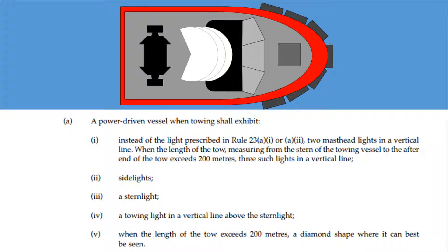three such lights in a vertical line, sidelights, a stern light, a towing light in a vertical line above the stern light. When the length of the tow exceeds 200 meters, a diamond shape where it can best be seen.